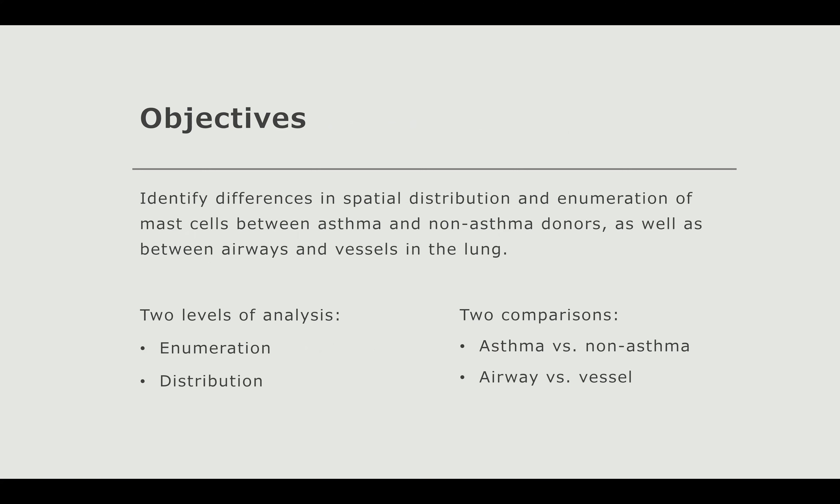The objectives of my study were to identify differences in spatial distribution and enumeration of mast cells between asthma and non-asthma donors, as well as between airways and vessels in the lung. There are two levels of analysis: one is the enumeration of mast cells — how many are around airways or vessels — and the other is the distribution, meaning how far mast cells are from those structures. And then there are two comparisons: asthma versus non-asthma donors, and airways versus vessels.